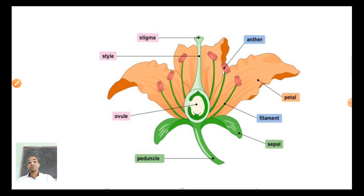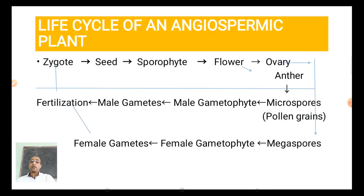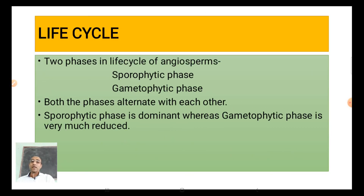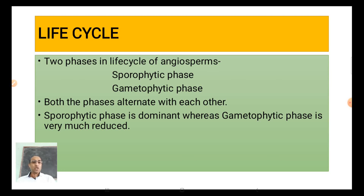To summarize what we studied today: the phases of the life cycle in angiospermic plants — gametophytic and sporophytic phases — and the structure of the reproductive organ, the flower. In the next video, we will discuss the process of sexual reproduction, starting with the pre-fertilization phase, since sexual reproduction has three phases: pre-fertilization, fertilization, and post-fertilization. Thank you.